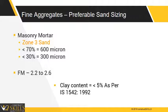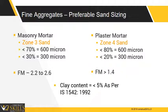For plaster mortar, zone 4 sand is used. Fineness modulus of sand is greater than 1.4, and clay content should be less than or equal to 5% as per IS 1542:1992.